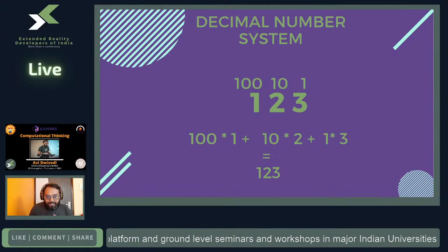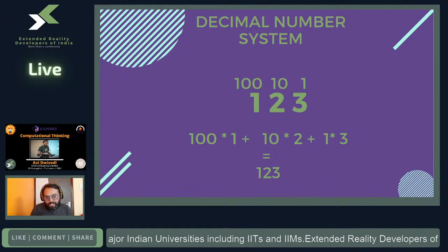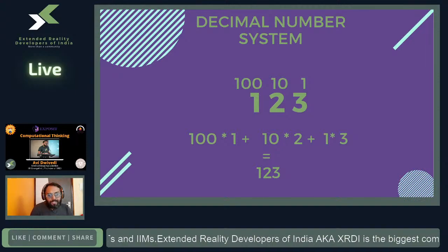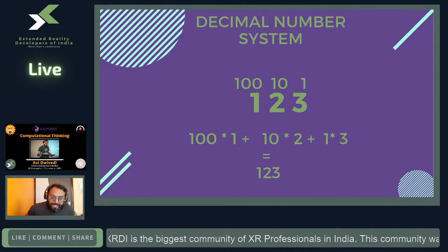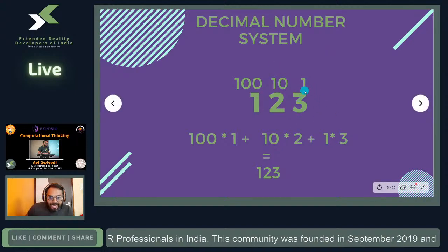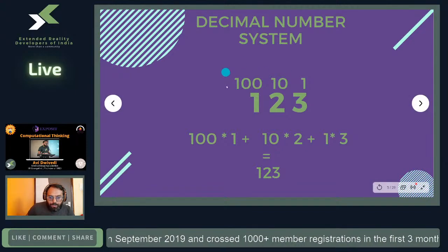So 100 times 1, plus 10 times 2, plus 1 times 3 gives 123. Every number system has a base — the base is the number of characters that can be used in that system. In the human number system we have 10 characters (0–9), so the base is 10. The first position is 10 to the power 0 (ones), second is 10 to the power 1 (tens), third is 10 to the power 2 (hundreds), and so on.